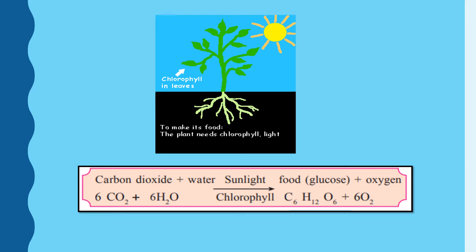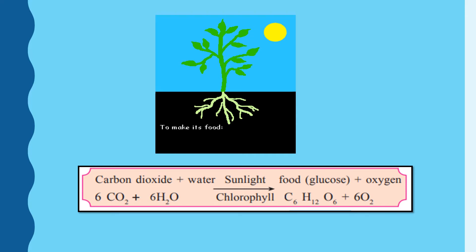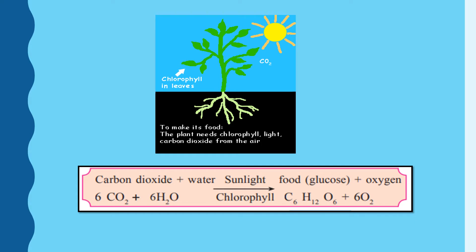Why do we write 6CO₂ and 6H₂O? For balancing this reaction — the number of oxygen atoms, carbon atoms, and hydrogen atoms must be equal in reactants as well as products. With 6 molecules of CO₂ and 6 molecules of water, glucose is formed as C₆H₁₂O₆ and oxygen is released in the air.